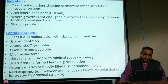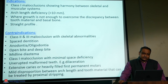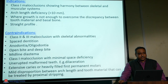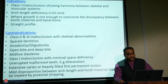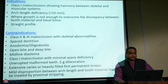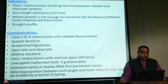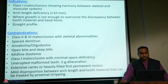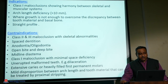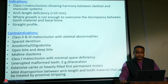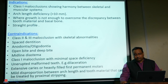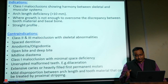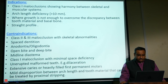Contraindications include Class II and Class III malocclusions with skeletal abnormalities, spaced dentition, anodontia, open bite, deep bite, midline diastema, Class I malocclusion with malformed teeth, extensive caries, and mild disproportion between arch length and tooth material that can be treated by proximal slicing. Serial extraction should not be done in these cases.